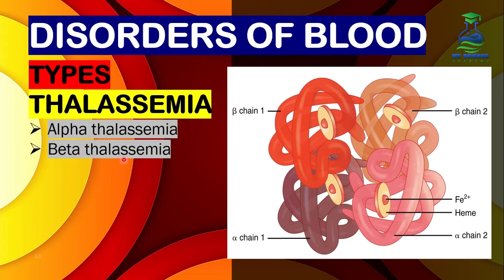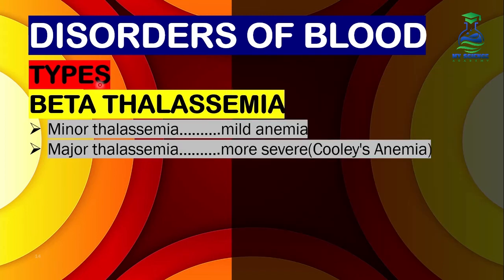Beta thalassemia has two further types: minor thalassemia and major thalassemia. Thalassemia is an inherited disease, and the patient receives mutated genes from parents. In minor thalassemia, just one mutated gene is inherited, resulting in mild symptoms — causing mild anemia.